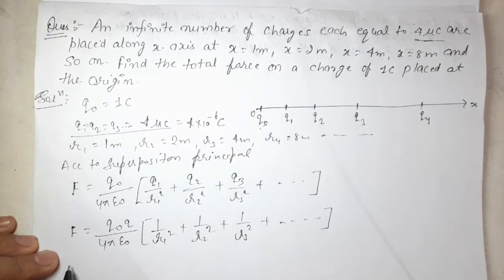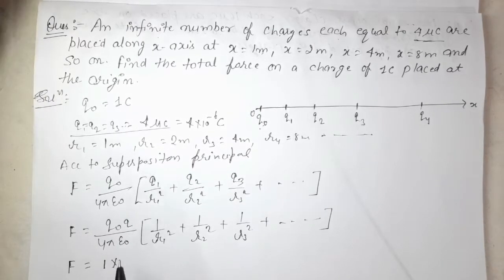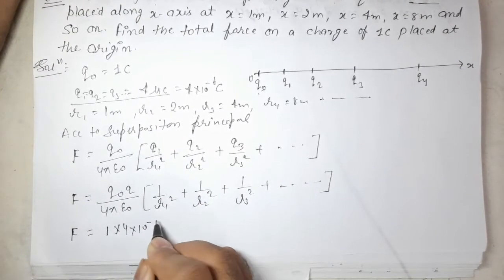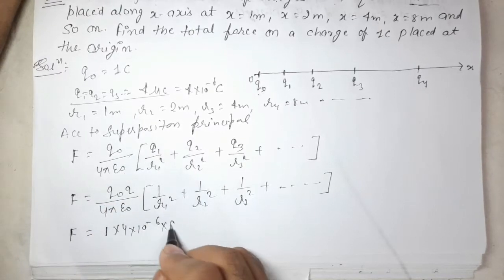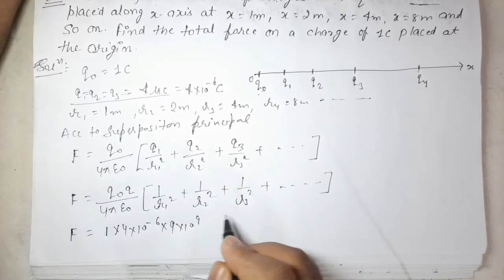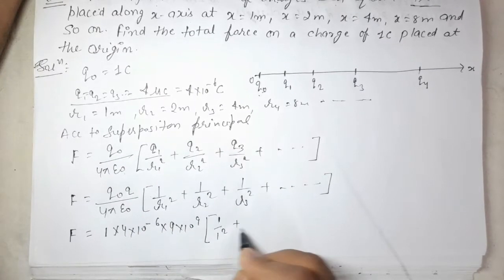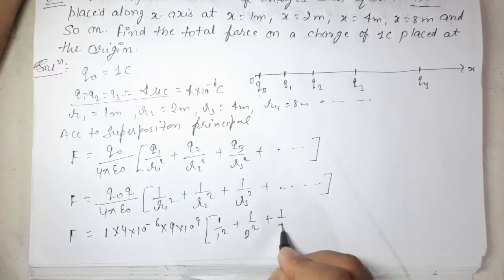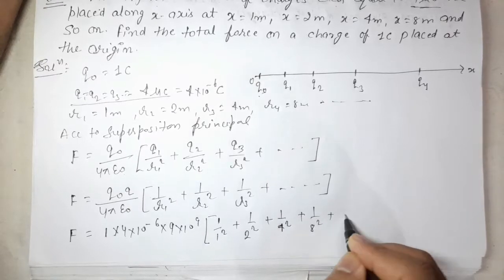Now we substitute the values. Q0 = 1 coulomb, Q = 4 × 10⁻⁶ coulomb, and 1/(4πε₀) = 9 × 10⁹. The series inside the bracket becomes: 1/1² + 1/2² + 1/4² + 1/8² + ...